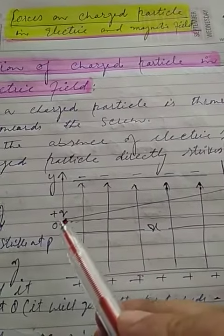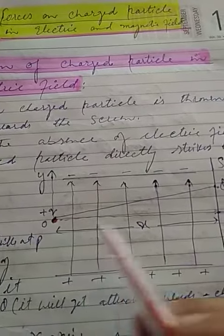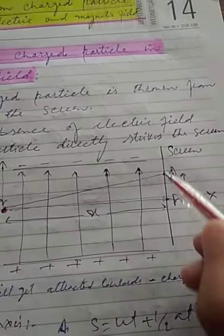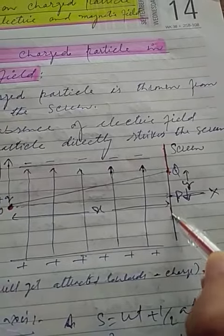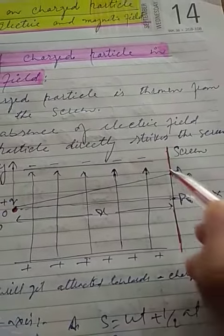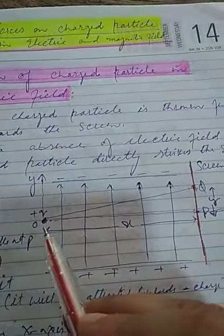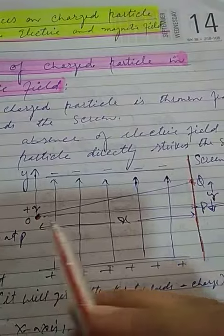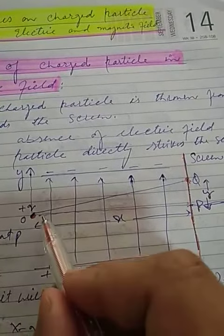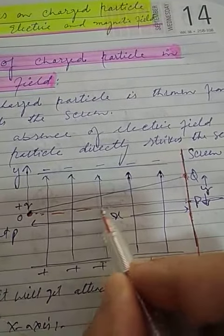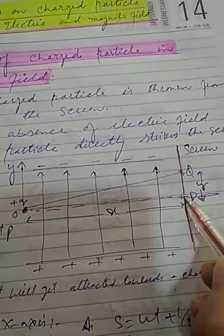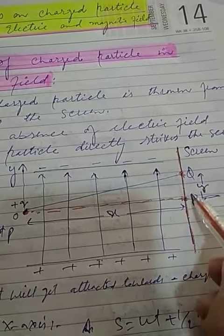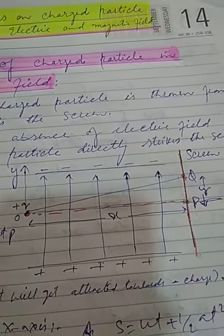We will throw this charged particle towards the screen, which is placed here. When we throw this charged particle towards the screen, it will strike the screen at point P — this happens when there is no electric field.